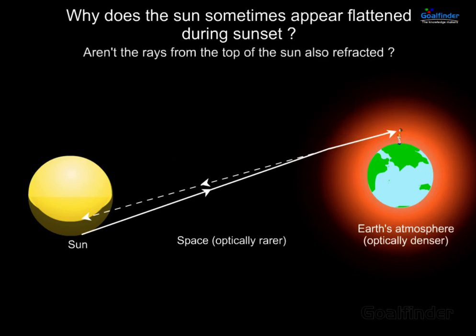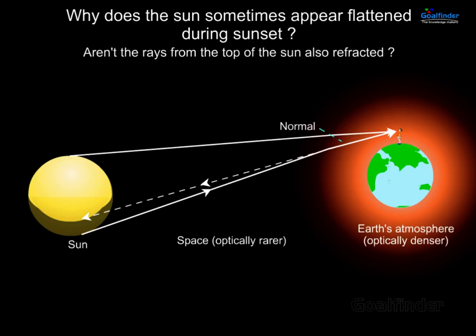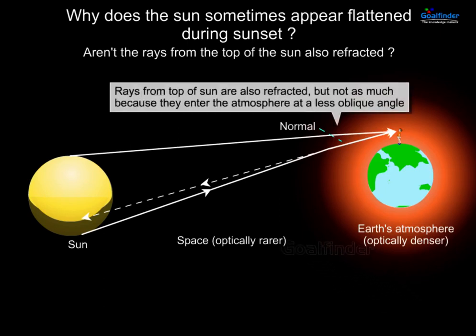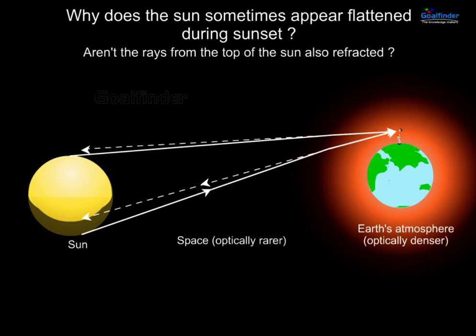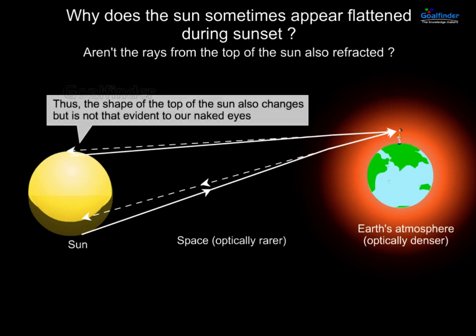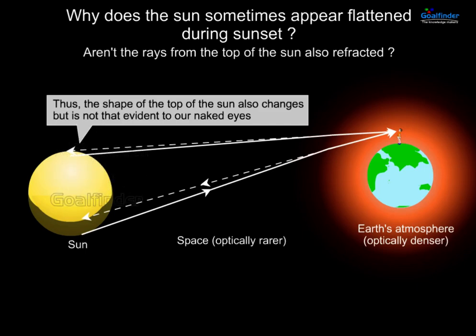Aren't the rays from the top of the sun also refracted? Rays from the top of the sun are also refracted, but not as much because they enter the atmosphere at a less oblique angle. Thus, the shape of the top of the sun also changes, but it is not that evident to our naked eyes.